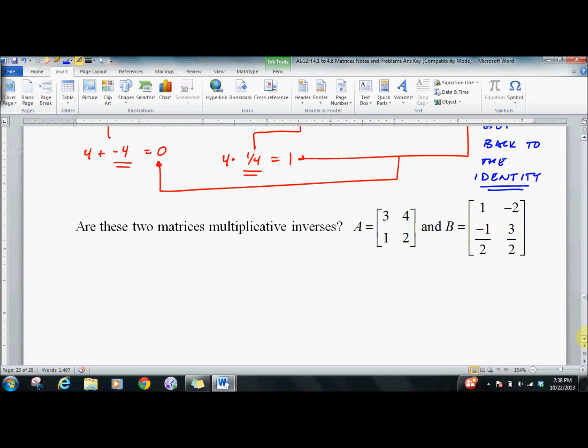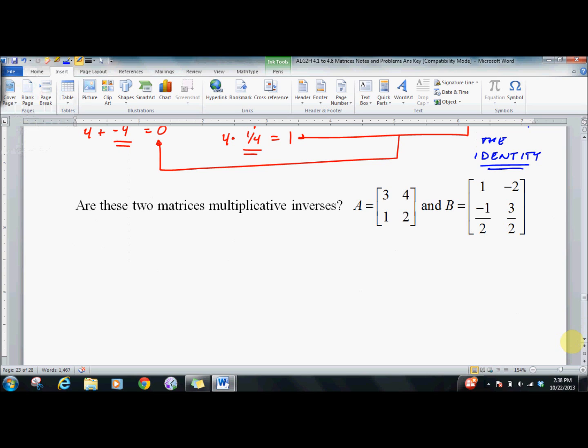So if these two are multiplicative inverses, based on the work we've done so far, we better get the [1, 0; 0, 1] when we multiply them. So let's see if we do. 3 times 1 is 3. 4 times negative 1/2 is negative 2. 3 minus 2 equals 1. Negative 6 plus 6 is 0. 1 minus 1 is 0. Negative 2 plus 3 is 1.